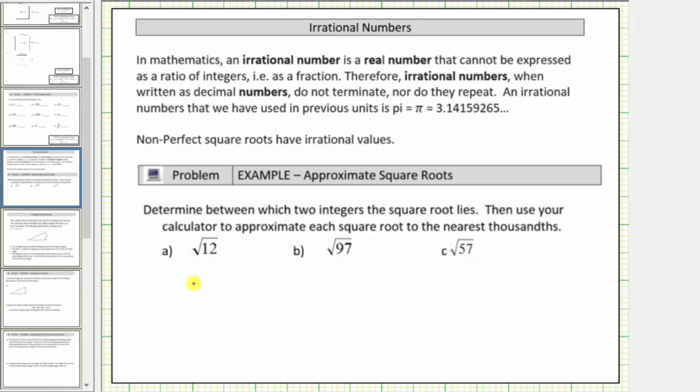So first we have the square root of 12. Because the square root of 9 equals 3 and the square root of 16 equals 4, and 12 is between 9 and 16, we know the square root of 12 must be between 3 and 4.